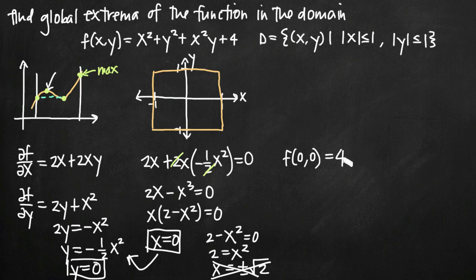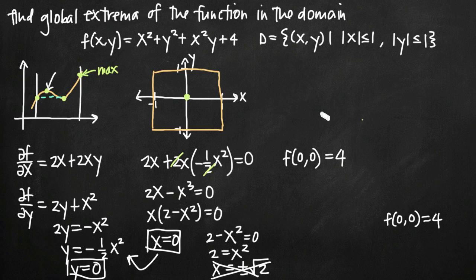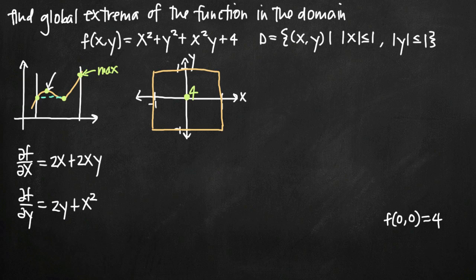So f at (0,0) is going to be 4. Let's put that down and graph the point (0, 0) inside the domain with a value of 4. Now in the same way that for a single variable function I tested my endpoints, here I need to test my corners and my edges. We'll start with the corners first because that'll be easier than doing the edges.